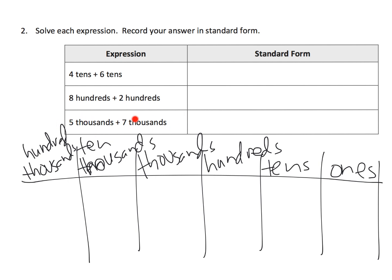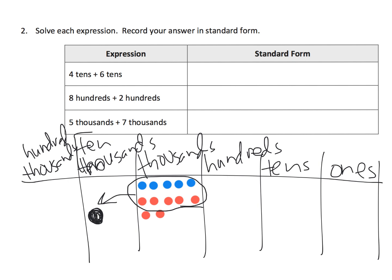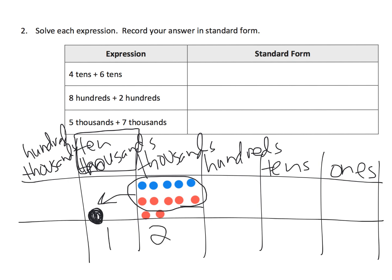Let's look at this problem: five thousands plus seven thousands. If we model that using place value disks, we place five thousand-disks and seven thousand-disks. Any time you have ten dots, you can exchange them — cash them in for one dot in the column to the left. So we end up with one in the ten thousands column and two in the thousands column. Writing in standard form with our comma: 12,000.